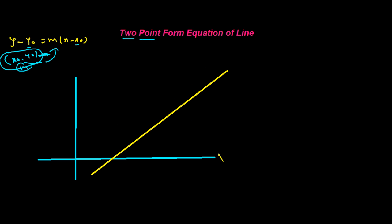This is x-axis, this is y-axis, origin. Let me say here is a point P whose coordinate is x₁, y₁, and here we have another point Q whose coordinate is x₂, y₂. We need to take a general point, so let me say this point A(x, y) is a general point on line L.